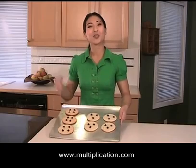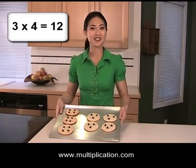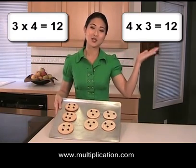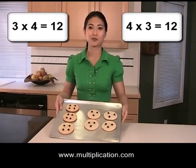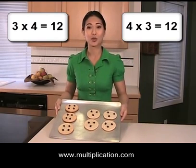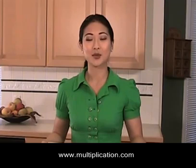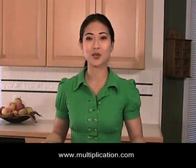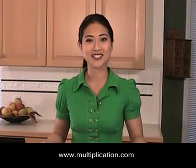So 3 times 4 equals 12, and 4 times 3 equals 12. And that's the commutative property of multiplication. Visit www.multiplication.com for more lessons, games, and fun.